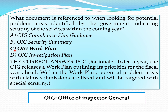The correct option is C, that is OIG work plan. Twice a year the OIG releases a work plan outlining its priorities for the fiscal year ahead. Within the work plan, potential problem areas with claims submissions are listed and will be targeted with special scrutiny.